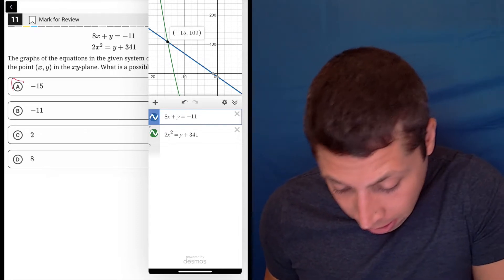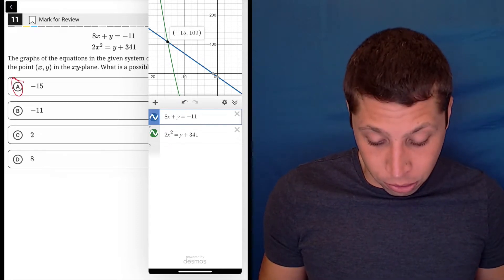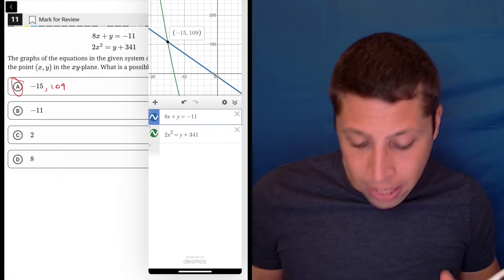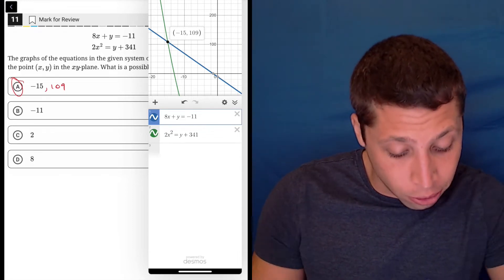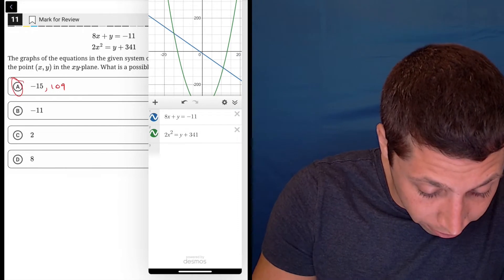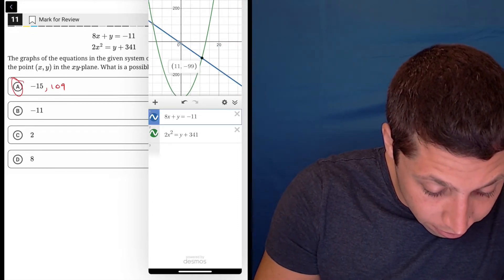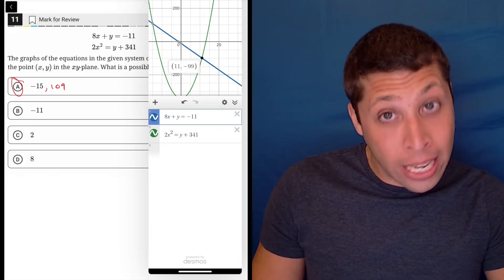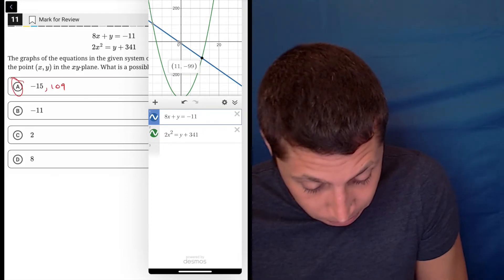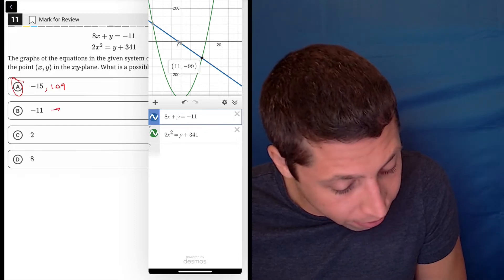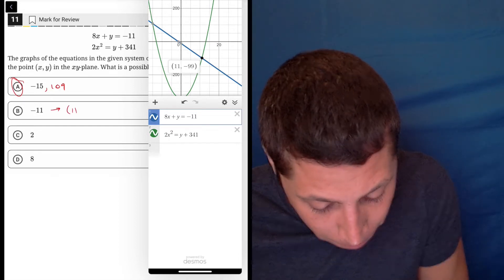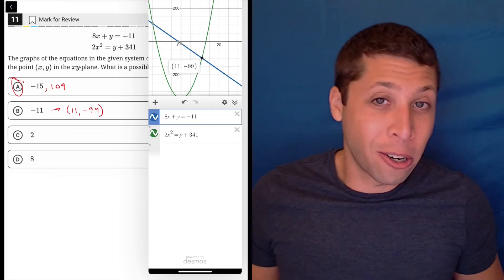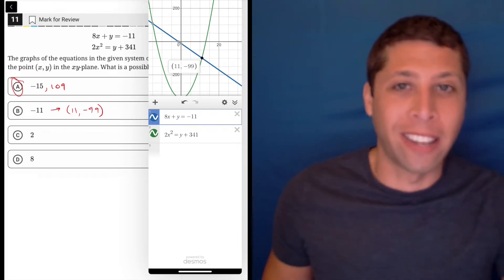Well, we have negative 15 as a value. So the coordinate that goes with it is 109. I don't really care, but that is one of the x values. There's got to be another one somewhere. Here it is. And it is 11, negative 99. Now we have a negative 11, right? So what's going on? How do we have, why do we have a positive 11 and then a negative 11? What's, is that a coincidence? No, of course not. It's never a coincidence.